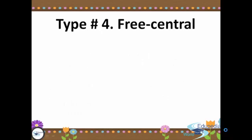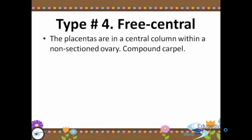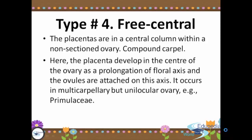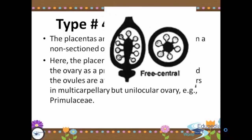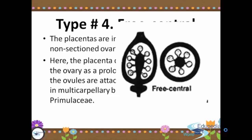The next type is free central placentation. The placentas are in a central column within the non-sectioned ovary of compound carpal. The placenta develops in the center of the ovary as a prolongation of the lateral axis, and the ovules are attached on this axis. It occurs in multicarpillary but unilocular ovary, such as Primulaceae. Here we have the picture of free central placentation.